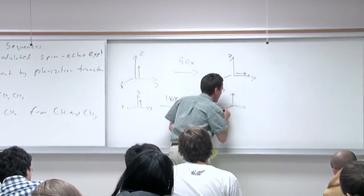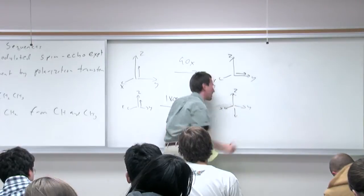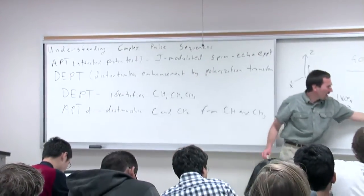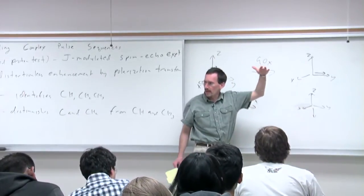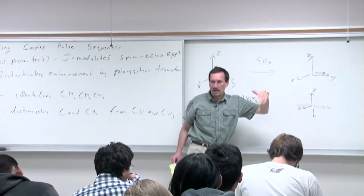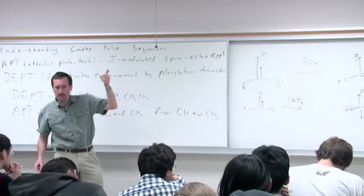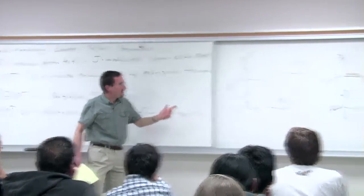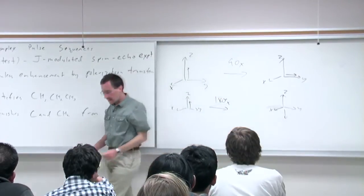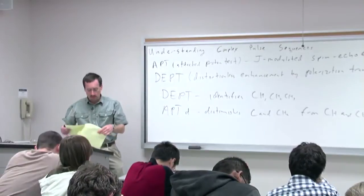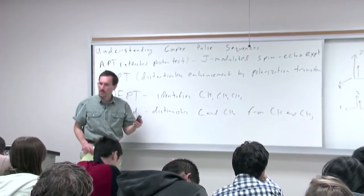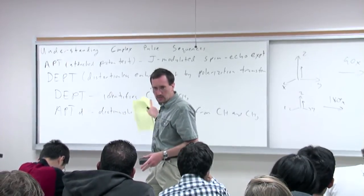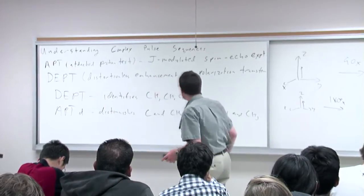The 180-degree pulse brings our magnetization to the negative Z axis, which means you've inverted the population of alpha and beta states. So if we had more nuclei in the alpha state (spin up) than the beta state (spin down) before, after the pulse you have more in the spin-down state. That's basically all the spin physics we need to get to a point to really think our way through an experiment that ultimately is going to allow us to distinguish our quats and methylenes from our methyls and methines.